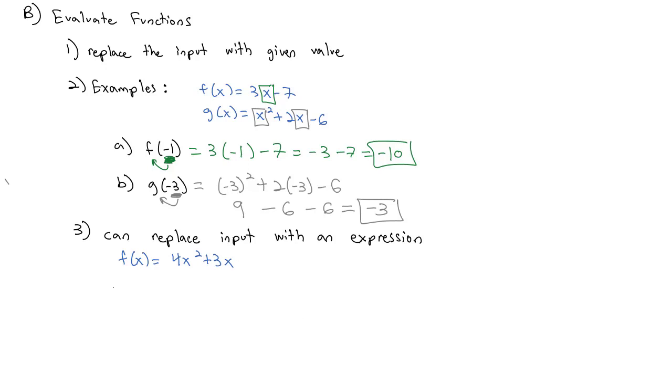And we're interested in finding f(3a - 5). Well now, this 3a - 5 is the input to the f function. So anywhere there's an x, it's going to be 4 times stuff squared plus 3 times stuff. That stuff is the 3a - 5, our input to the function.